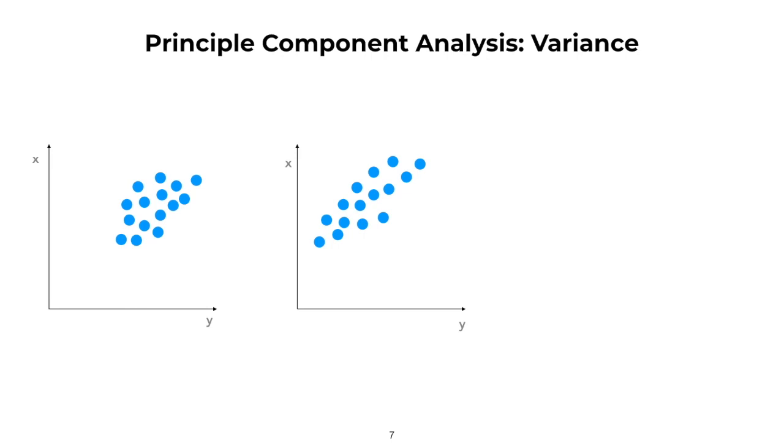One such approach is PCA, that uses dimensionality reduction to show us what the data variability looks like. In PCA, we use the approach of principal components, that explain variance in our data in the best possible way.